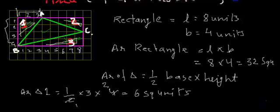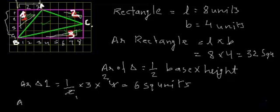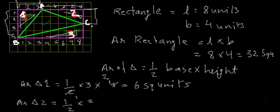And what will be the area of triangle 2? Area of triangle 2 will be 1/2. If we call the base — this much as base — it is 2 units. So multiplied by 2, and the height is 1, 2, 3, 4, 5 units. So multiplied by 5 — this 2 cancels and the area of triangle 2 is 5 square units.